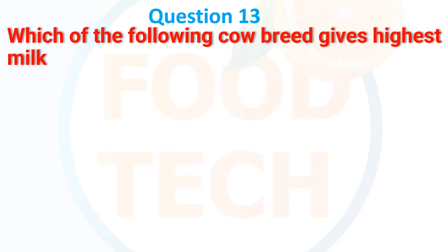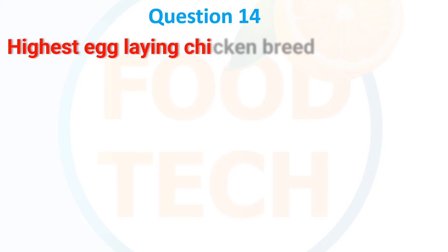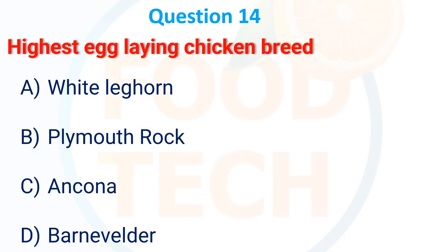Next MCQ: Which of the following cow breeds gives the highest milk yield? Options: (A) Holstein, (B) Jersey, (C) Brandless, (D) Shorthorn. The correct answer is A — Holstein.